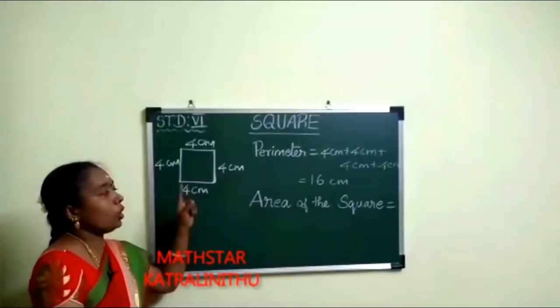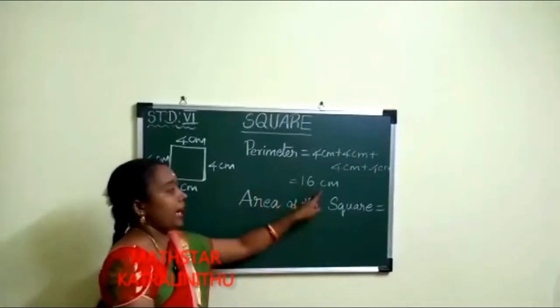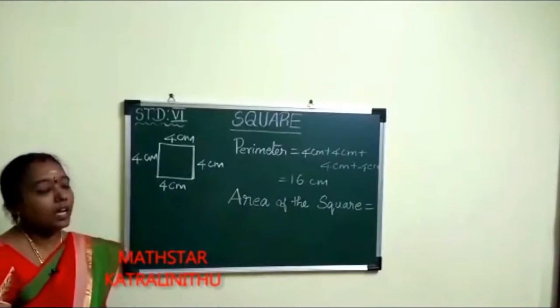Here, for perimeter, the unit is the same as the given length unit. Since the length is given in centimeter, our answer comes in centimeter.